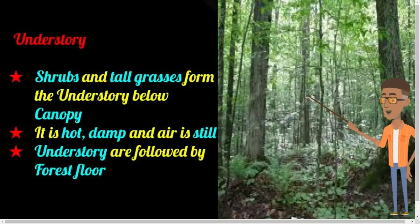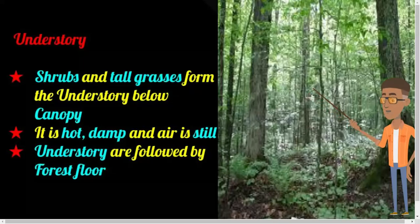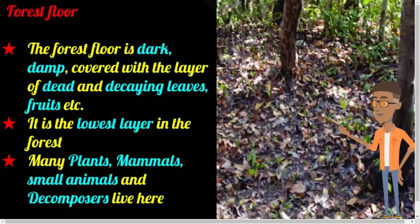In the forest, the vegetation that grows under the shade of the canopy is called the understory. The understory consists of shrubs, young trees, palms, and woody plants that grow in the shade of taller trees. The shrubs form the lowest layer. The understory is hot and damp. Animals found in the understory include various kinds of frogs, tree frogs, snakes, insects, butterflies, monkeys, and many more.